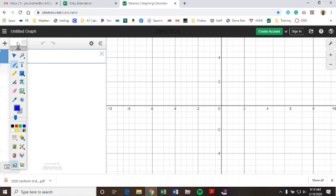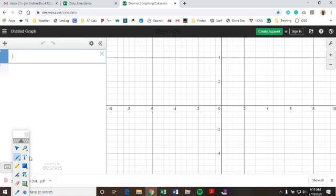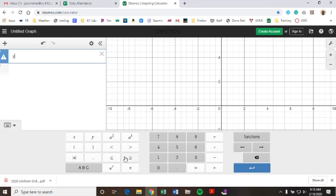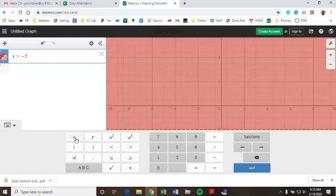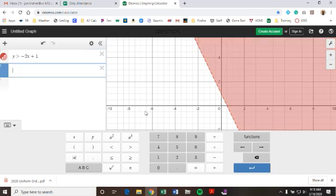Let's go to Desmos and put in our two systems. So our first inequality was y is greater than negative 2x plus 1. And we see that Desmos has shaded this inequality for us. But now at the same time, let's go to box 2, and let's put in the other inequality, which was y minus x is less than or equal to 3.